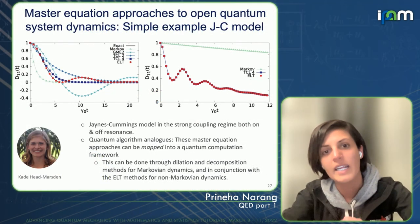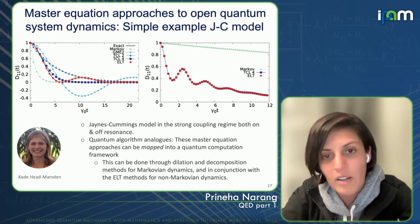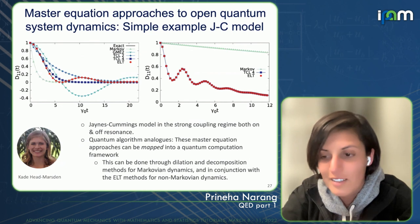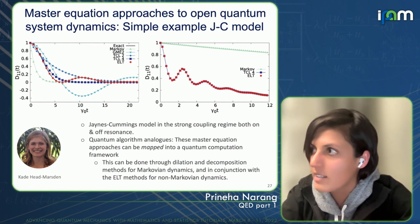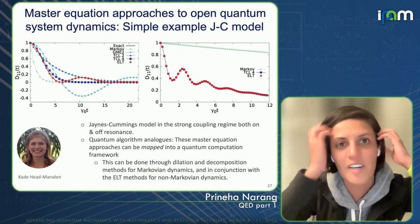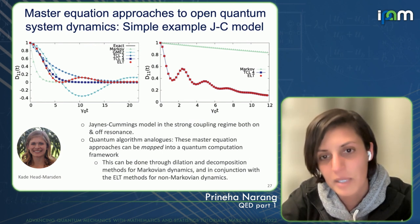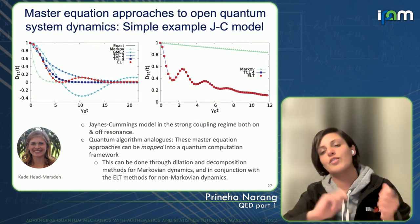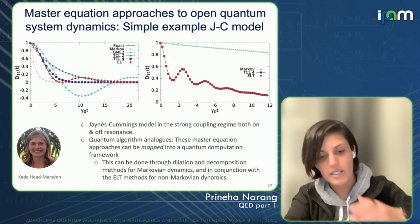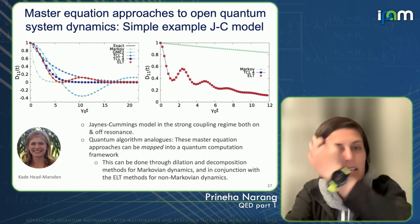What's further exciting is that this ELT algorithm for non-Markovian effects can be mapped onto a quantum device — there is a quantum algorithm analog of this approach. We do this through a combination of dilation decomposition methods for Markovian and the ELT component for non-Markovian. Since this work first appeared, we now have a couple of other extensions that have been published. The Jaynes-Cummings model isn't the most exciting problem to solve using all this machinery, but having a quantum algorithm analog of it presents the way to doing more complicated non-Markovian dynamics.